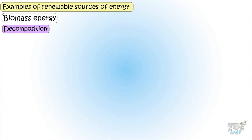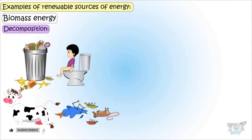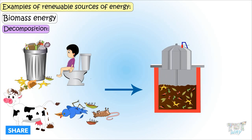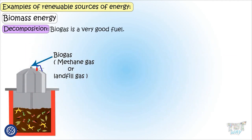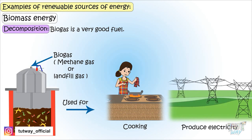Another method is decomposition. Garbage, human and animal waste, and dead animals can all be left to rot, and that releases a gas called biogas, also known as methane gas or landfill gas. This biogas is a very good fuel which can be used for cooking and to produce electricity.